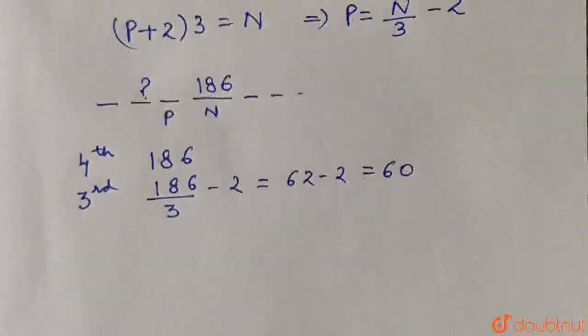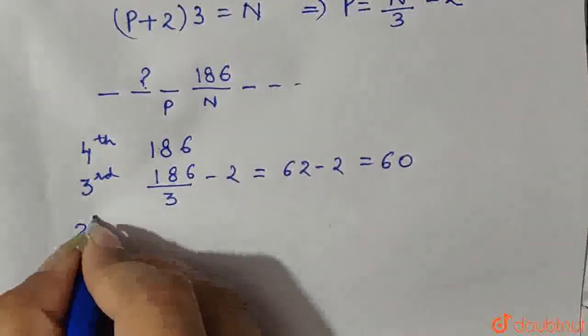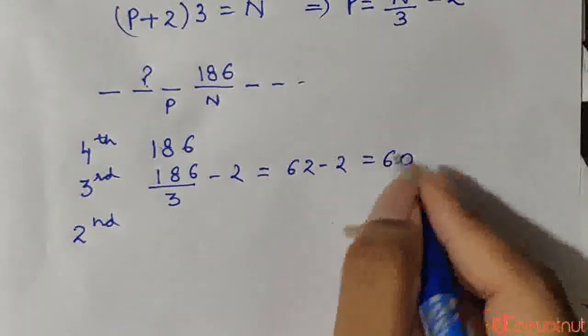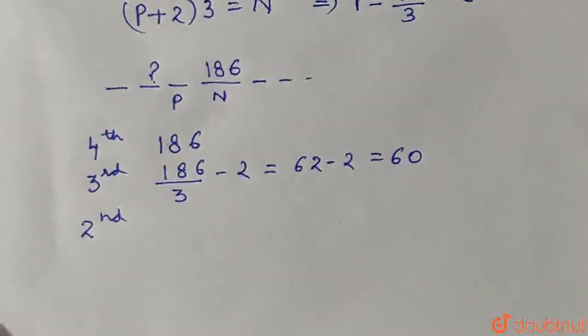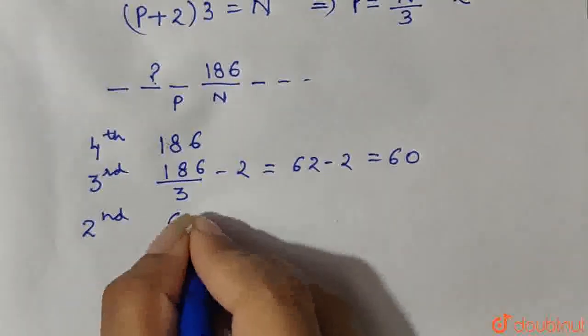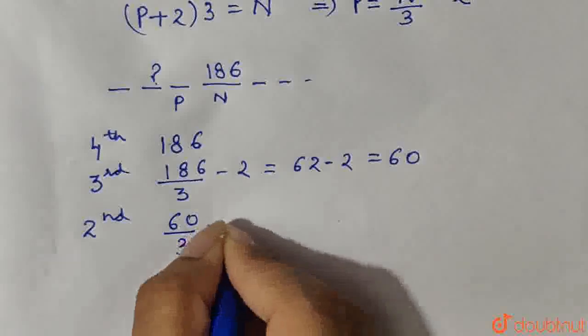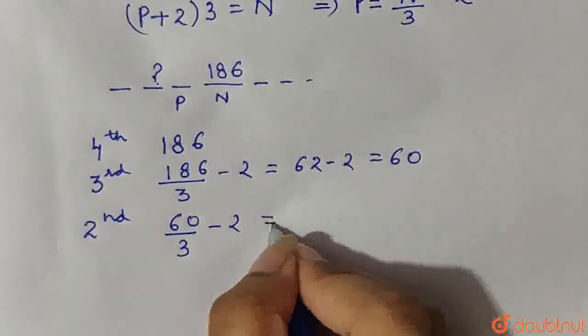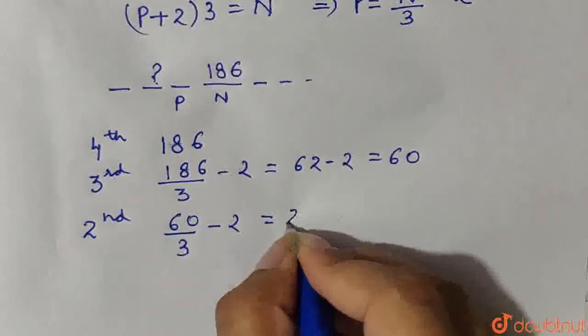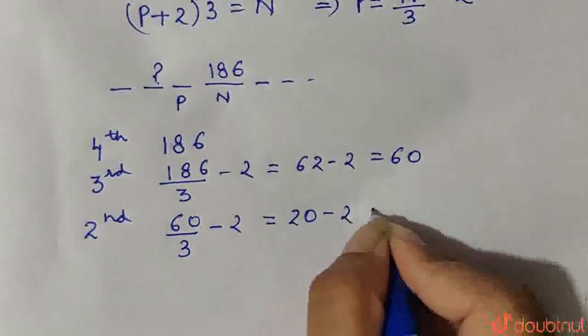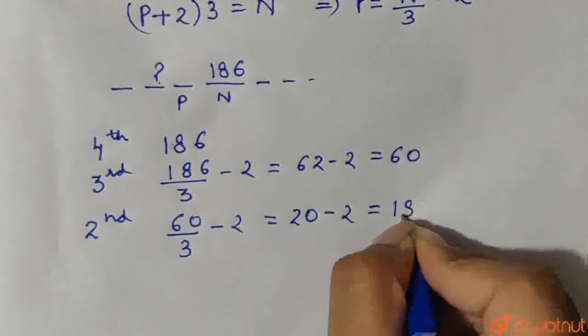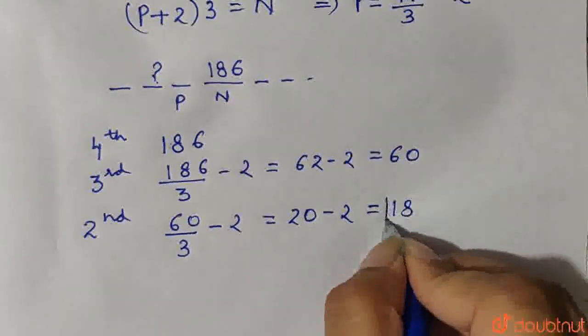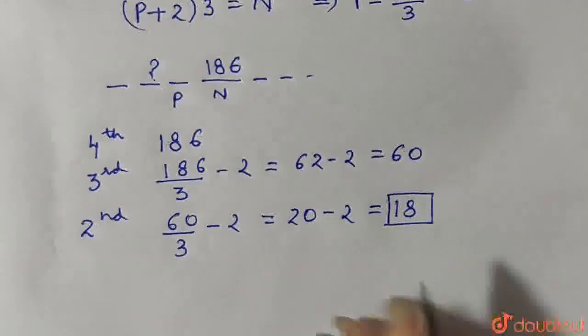So that means the 3rd term is 60. So similarly the 2nd term would be the previous term, that means the 60 divided by 3 minus 2, so 60 divided by 3, which gives us 20 minus 2 is equal to 18. So that means the 2nd term of the sequence is 18.